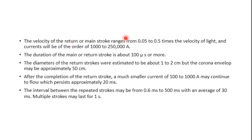The velocity of the return stroke ranges from 0.05 to 0.5 times the speed of light. The current magnitude is from 1,000 to 250,000 amperes. This is the step leader and return path — the current is around 1,000 to 250,000 amperes with a voltage of around 100 to 1,000 megavolts. Just imagine the total amount of current carried by each lightning stroke. Remember, the leader is not responsible for the main lightning phenomenon — it is the return stroke that is more effective than the step leader.